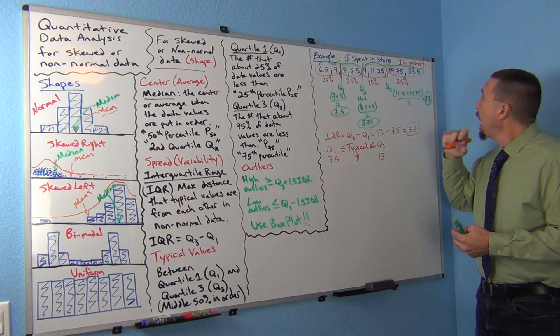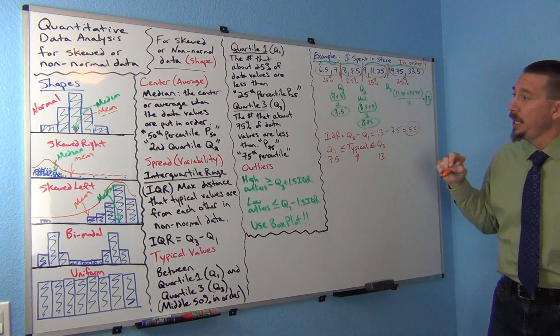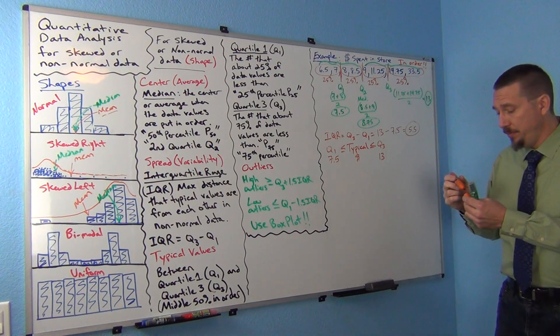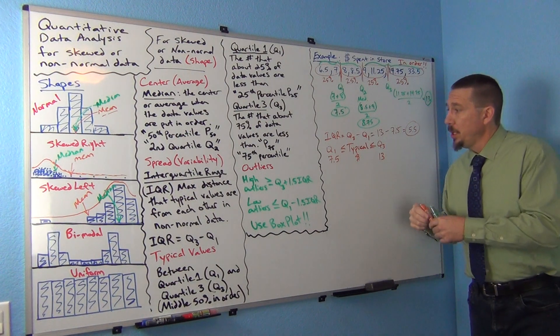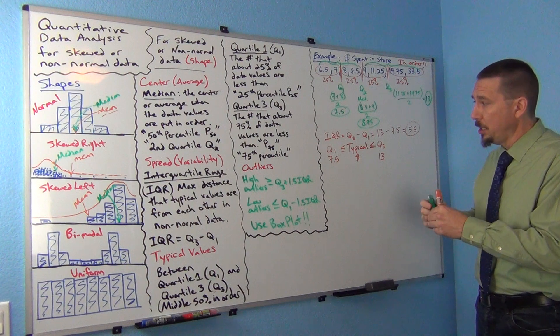Now what about our outliers? How do we find our outliers? We want to use the outlier cutoff here. So our outlier cutoff.